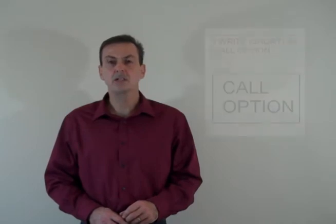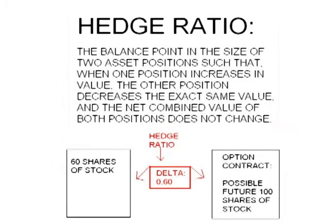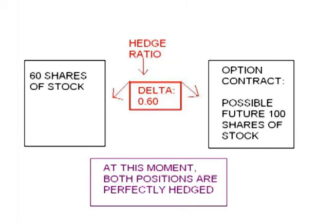I then take two offsetting positions. In the first position, I short — also called write — a call option on a stock. I then calculate something called the hedge ratio, also known as the option's delta. This is the ratio of stock I must hold per option contract that I short so that both positions are hedged. For example, let's say the calculated ratio is 0.6. An option contract is for 100 shares and the option's delta is 0.6. So for the second position, I buy 60 shares of the stock using the money I collected from selling the call option and borrowing the rest of the money at the risk-free rate by shorting a bond. At that particular moment, I am perfectly hedged — the moment the stock moves in price, the value of the option I shorted will increase or decrease at the exact opposite amount as the stock position I hold, and the total combined value does not change.